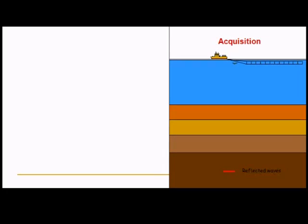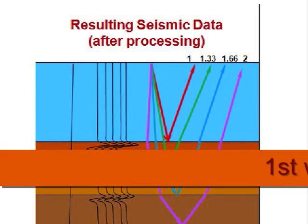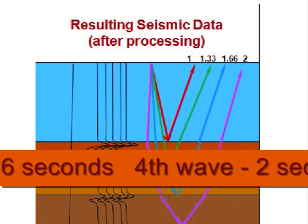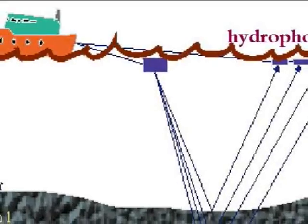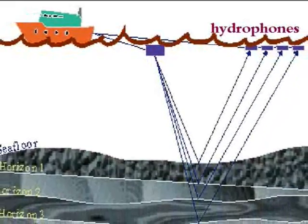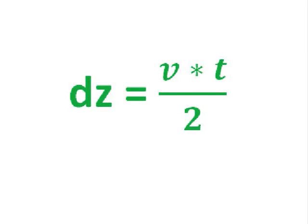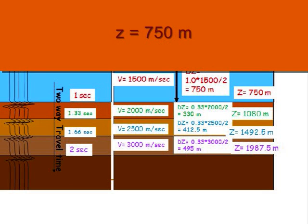Once we determine the velocities of the waves, we can determine the depths of the water. On our chart, we see that the first wave's travel time was 1 second, the second wave's travel time was 1.33 seconds, the third 1.66 seconds, and the fourth was 2 seconds. With the exact time, we can calculate the depth. Remember, the velocity of the wave changes as it travels through the different rock types. In denser rock, the waves travel faster. Using V for velocity, DZ for depth of the zone, and Z for the total depth, we can solve the following equation: Depth equals velocity times time divided by 2. V equals 1,500 meters per second. DZ equals 1.0 seconds times 1,500 divided by 2 equals 750 meters. Z equals 750 meters.